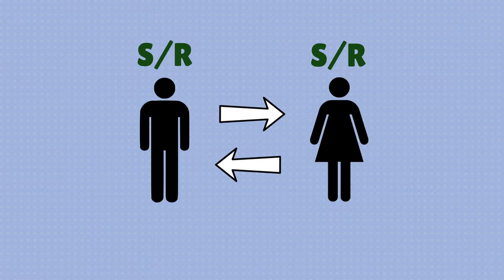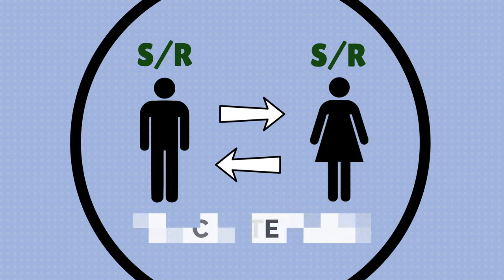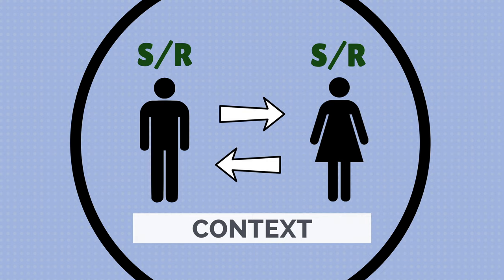Another aspect that this model brings into the situation is the context. Anytime you're interacting with someone it's not isolated and pure. You're in a context — let's say you're in a work setting — and that work setting shapes the way you send and receive messages.